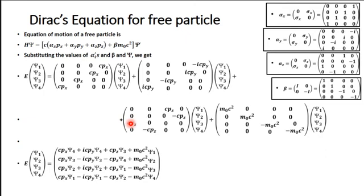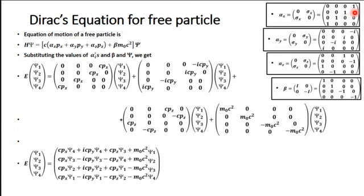Let's write the equation of motion for a free particle: H psi equals c(alpha-x p-x plus alpha-y p-y plus alpha-z p-z) plus beta m-naught c-squared, all times psi. Substituting the expressions for alpha-x, alpha-y, alpha-z and beta, c p-x is multiplied to the corresponding block giving entries 0, 0, 0, c p-x and 0, 0, c p-x, 0.